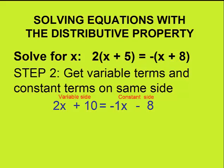On the variable side, I want to get rid of the 10. To eliminate 10, I will subtract 10 from both sides of the equation. We are left with 2x on the left-hand side, and we have minus 1x minus 18 on the right-hand side.